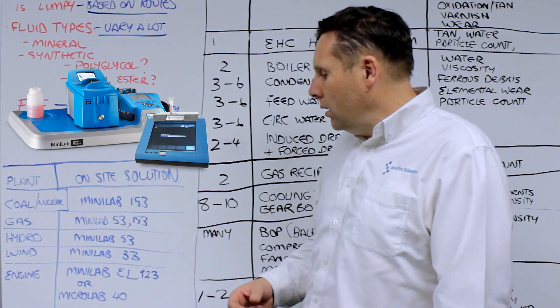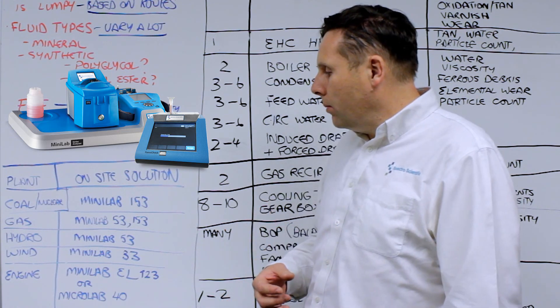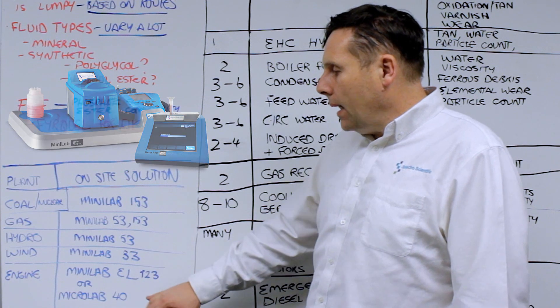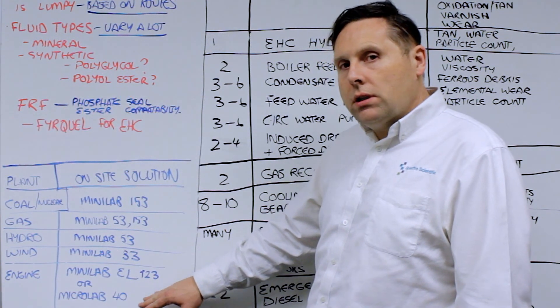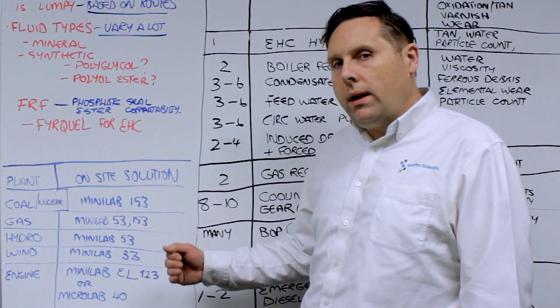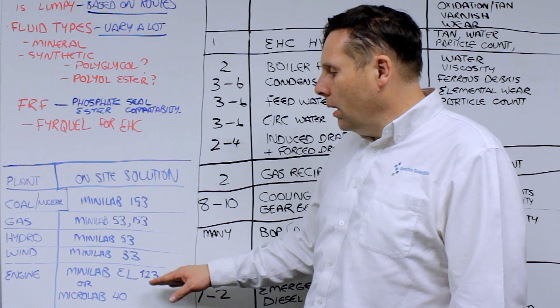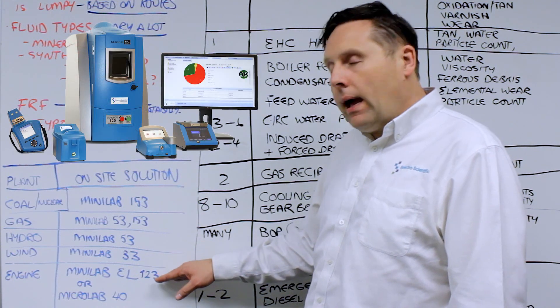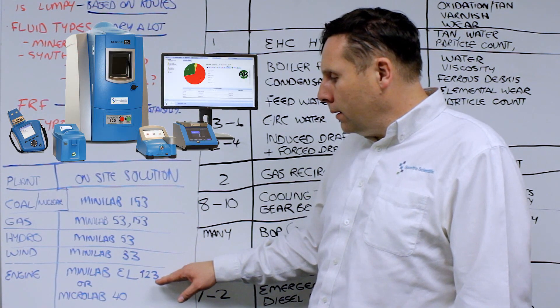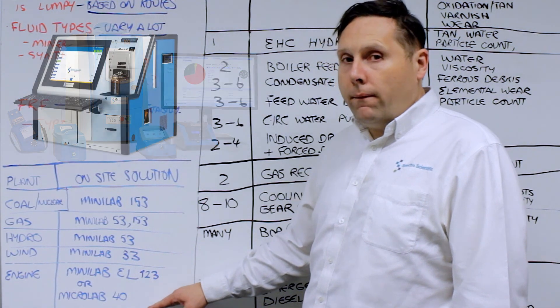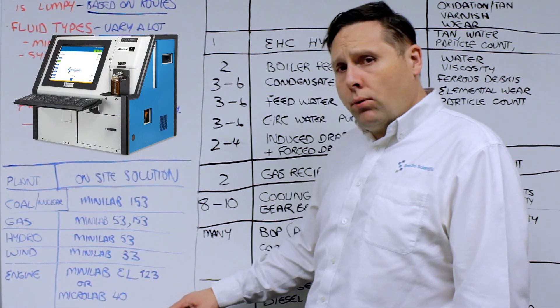And of course, for engine applications, if you are in a situation where you have a distributed generation where engines are all over the place, you might want to consider either the Minilab EL-123 system or the Microlab 40 system to support that.